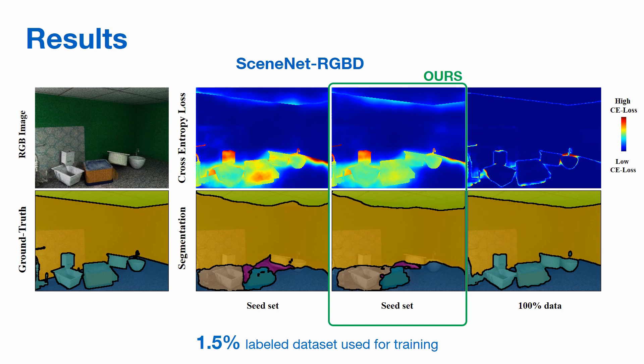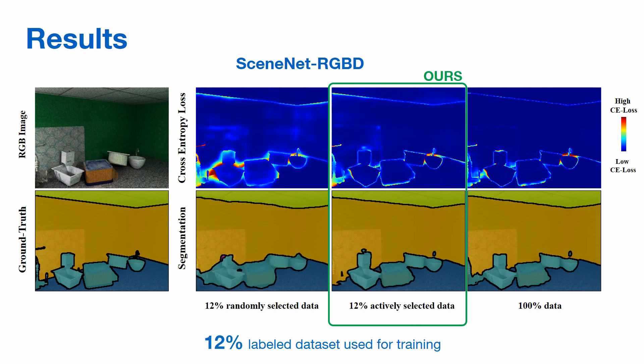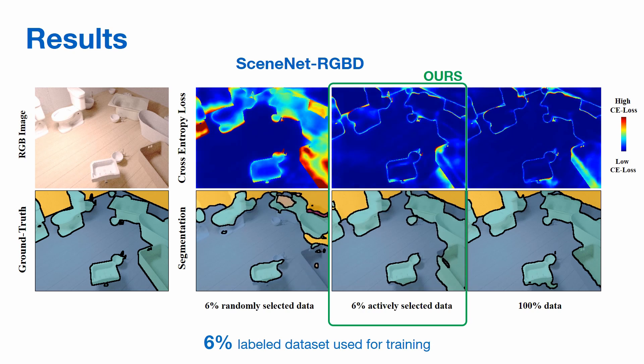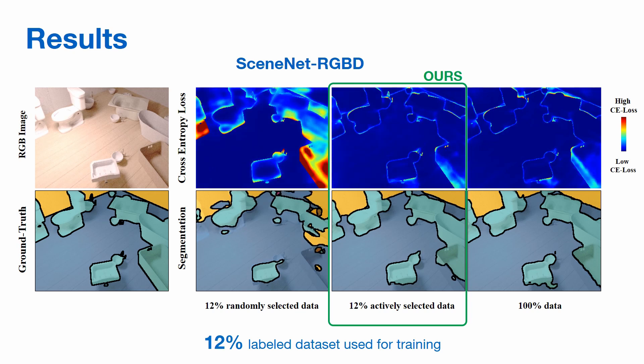Here are some visualizations of the quality of segmentations produced by random selection against our method. We see that the quality of our method's segmentation improves visibly over random selection. Our method achieves performance comparable to training with a full dataset using only a small fraction of labeled data.